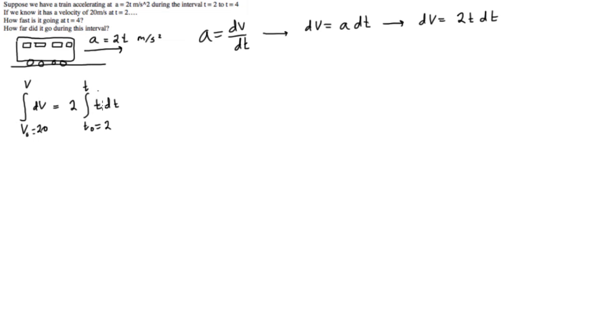We will just go through with integration now. The integration of dv is just simply v from 20 to v, and this is 2 times the integration of t, so we get 2 times one half t squared, and these obviously cancel out with each other. And this was from 2 to t.